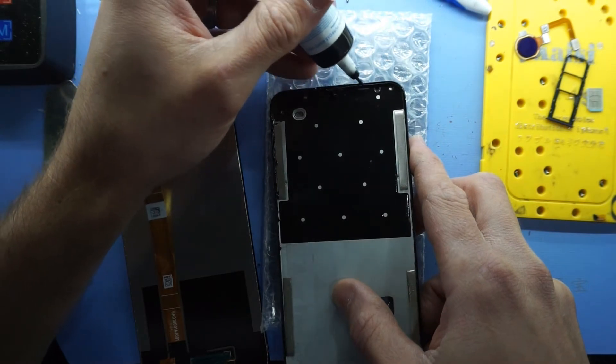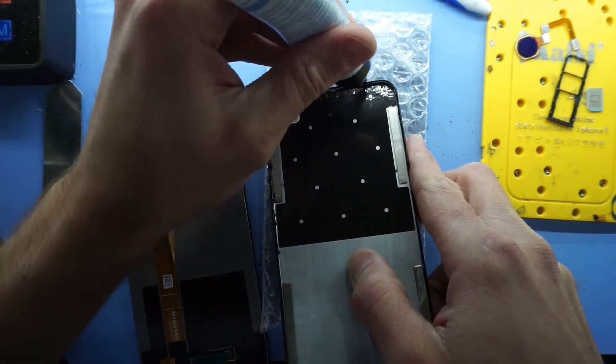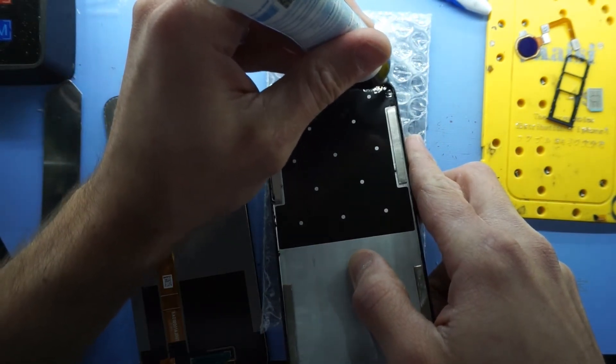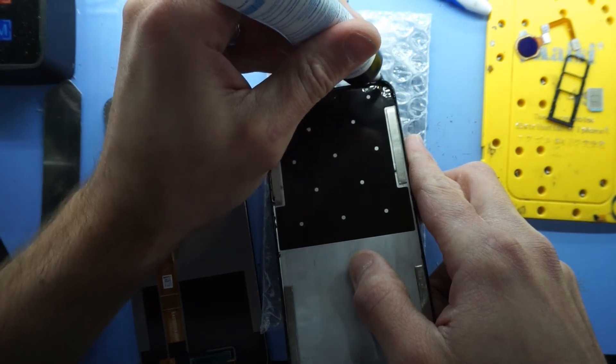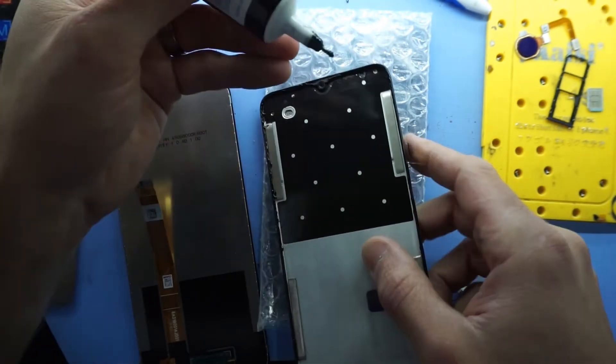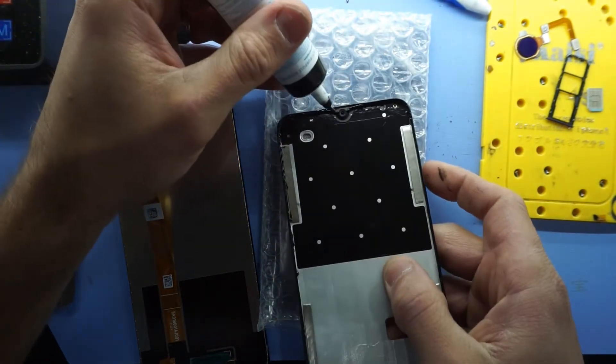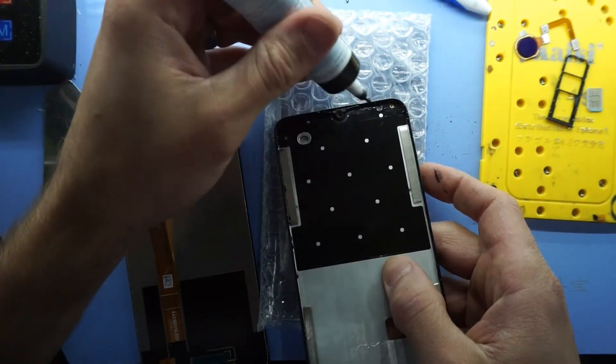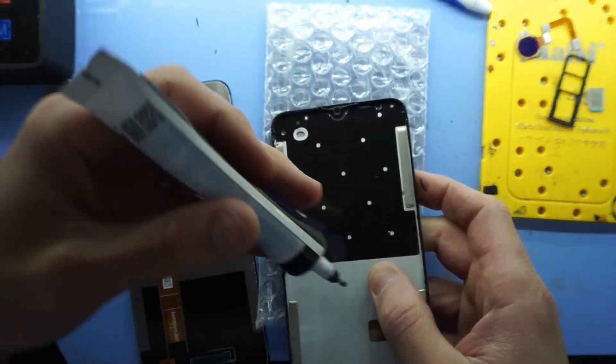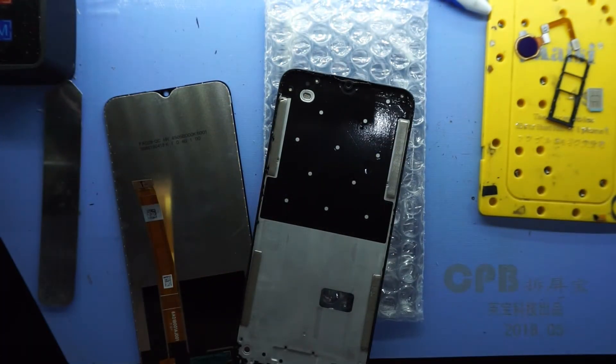Be careful not to get any glue on the actual camera itself. That would certainly suck. And also I believe the earpiece speaker is up there too. So you don't want to fully seal this area up either. There we go. It's going to do for now.